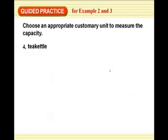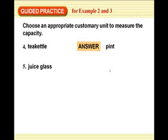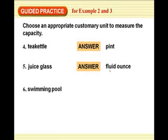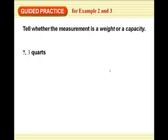Okay. Choose the appropriate customary unit to measure the capacity. So a tea kettle, well, I think we could put more than an ounce in a tea kettle. We could probably put more than what you guys drink, you know, in a cup at home. I would say it's either quarts or maybe even a gallon. Let's see what they said. Ooh, they said a pint. You know, it depends, I guess. Totally, see, everybody's got a different take on it. A juice glass, I'm going to call it in ounces or cups. I would take either one. A swimming pool, gallons, because there's lots of water in a swimming pool.